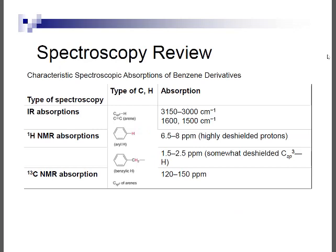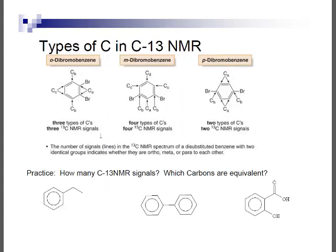A brief spectroscopy review: you should review IR, proton NMR, and carbon-13 NMR for homework questions involving benzene derivatives. You may be given a reactant and reaction conditions, then asked to identify functional groups or alkyl substituents on the benzene ring from spectroscopic absorptions to determine the product.